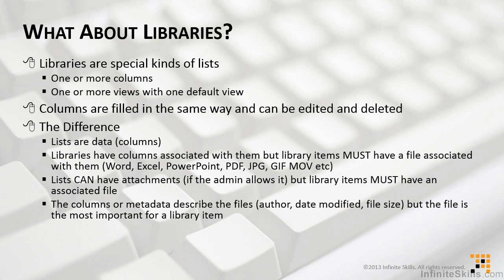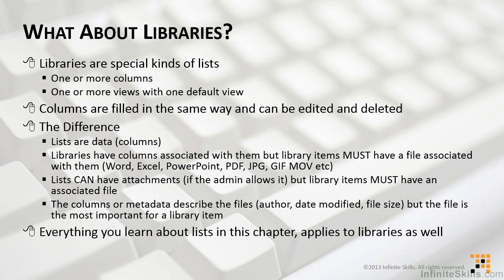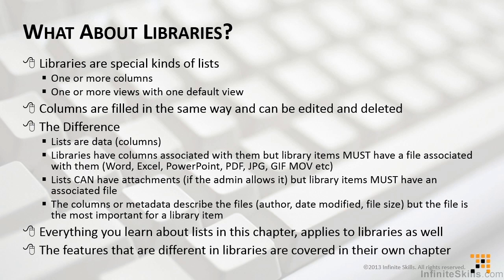For a library, the columns or the metadata describe the files — who the author is, what date it was created or modified, what's the actual file size or the playtime. But for libraries, the file is the most important, whereas lists only rely on the metadata or the columns themselves. Everything you learn about lists in this chapter applies to libraries as well. The features that are specific to libraries will be covered in their own chapter, and everything you learn now applies to everything.